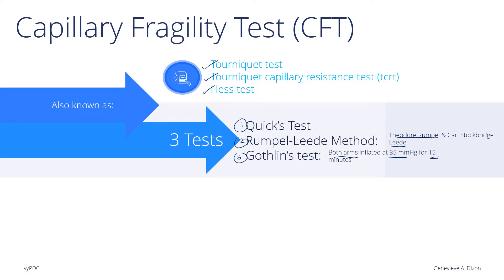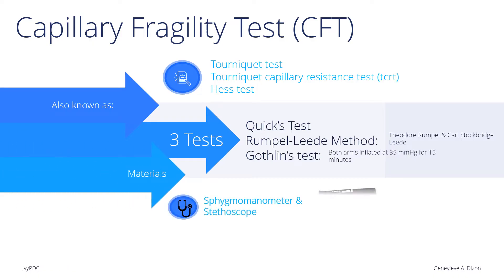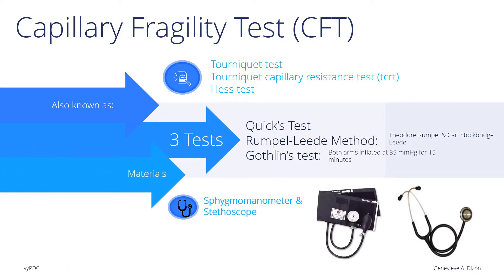For the experiments we will be doing in the laboratory, we will perform both the Quick's test and the Rumpel-Leede method. Materials needed for these experiments would be a sphygmomanometer and a stethoscope.